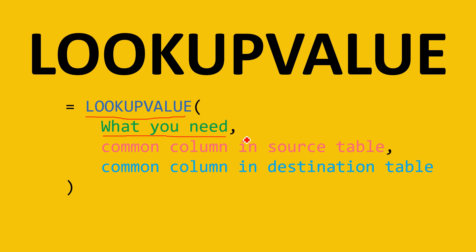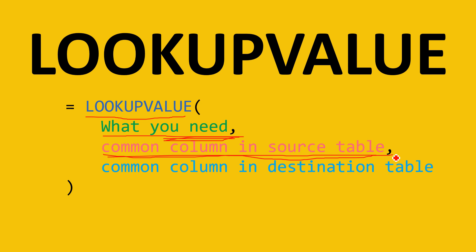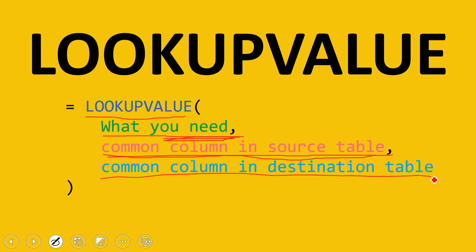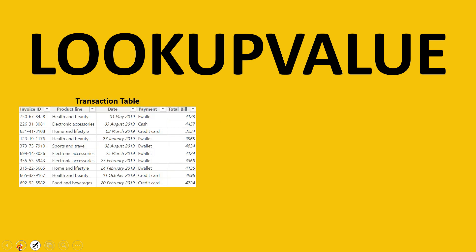After the function name, the next thing is what you are looking for — you provide that here. Then you provide the common column in the source table from where you want to bring the column. That source table must have a common column matching your current data. Then you provide the common column from your current (destination) table. Close the bracket and hit enter — the syntax is complete.